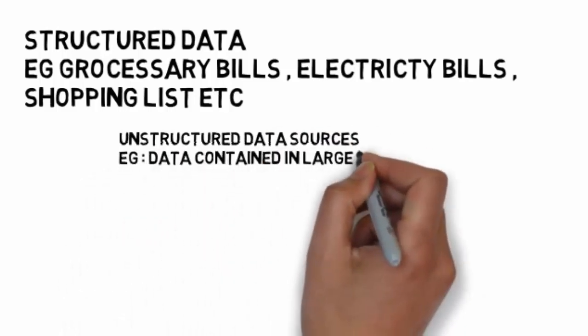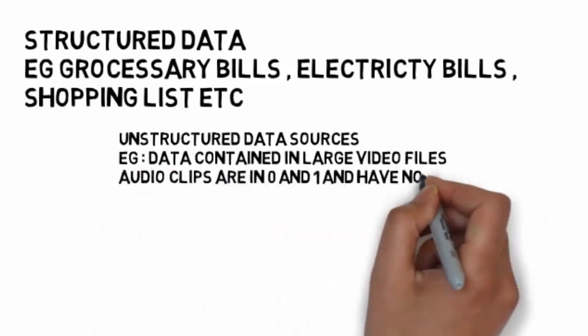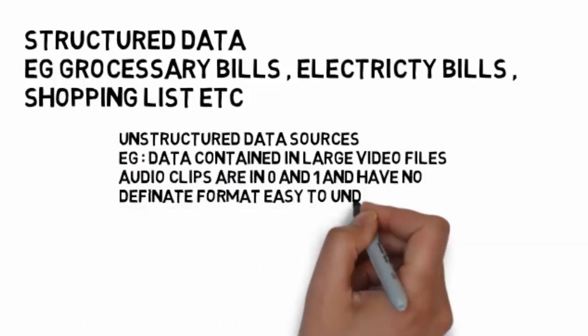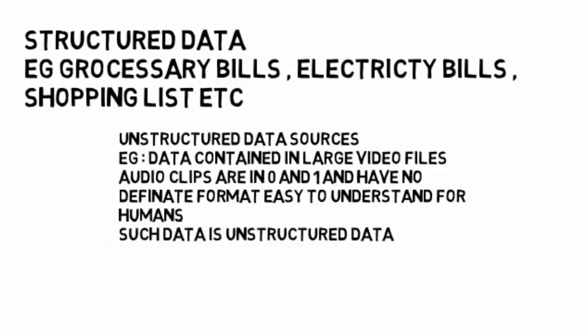Unstructured data includes data containing large video files, audio clips, etc. Most of the data are in the form of zeros and ones and have no definite format easy to understand for humans. Such kind of data which is contained in videos, which is not very related together, requires complex computer software to analyze such data. Such kind of data is known as unstructured data.